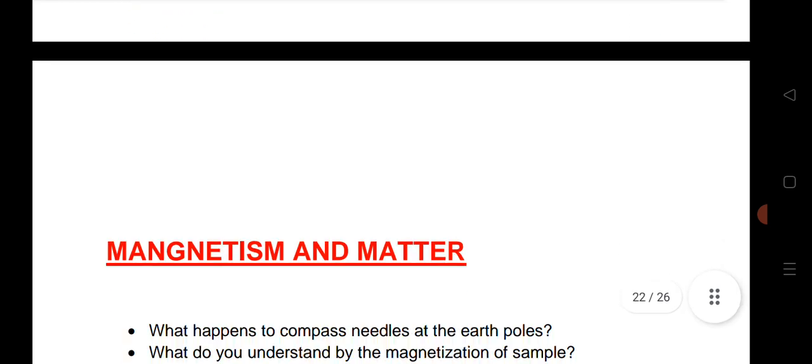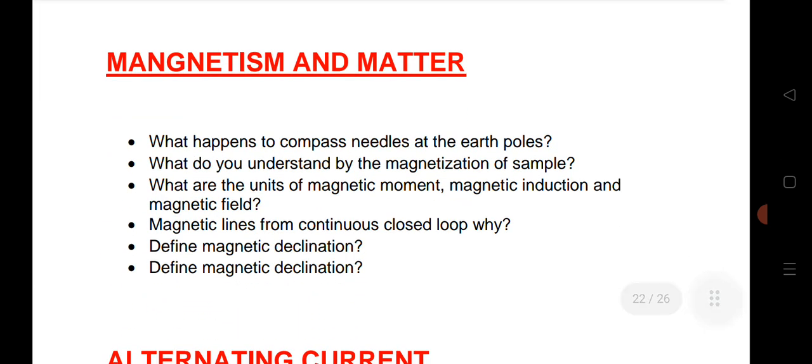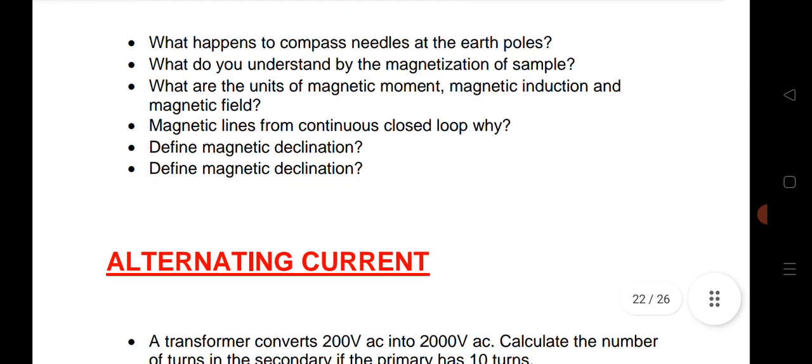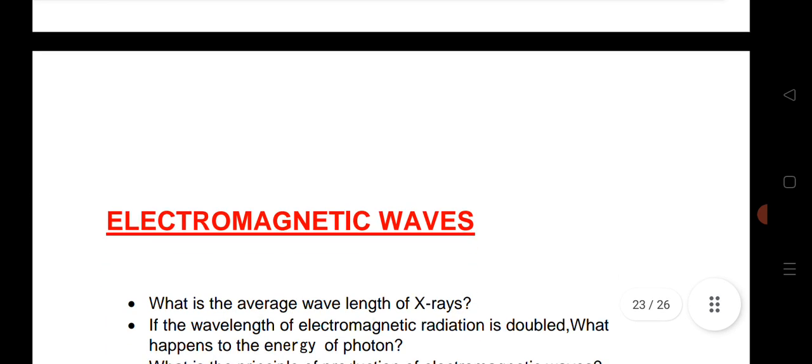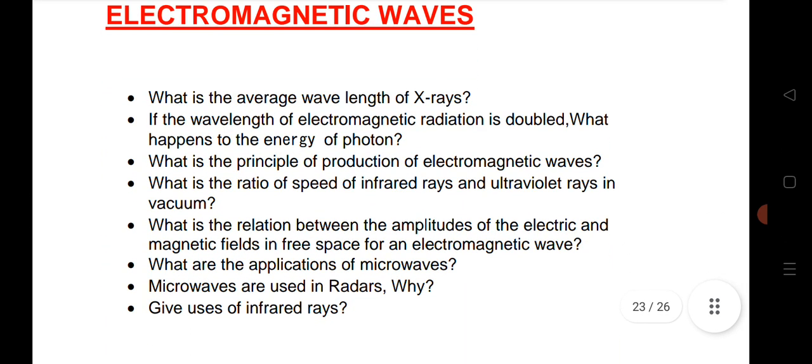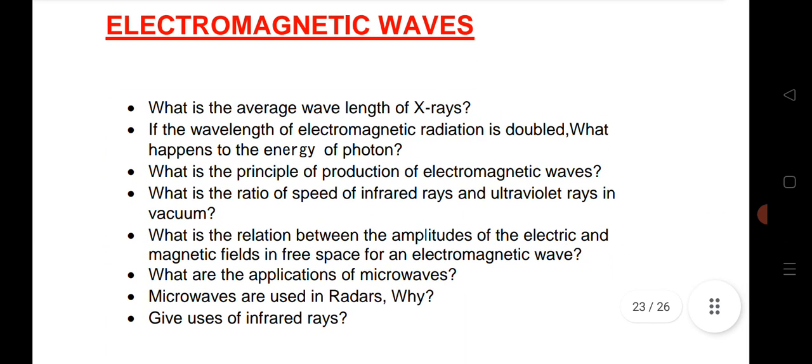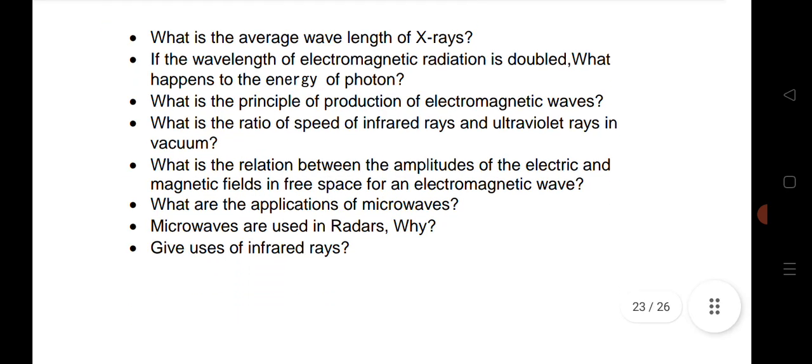Next is magnetism and matter. I have given some questions - very important chapter: magnetic inclination and declination. The last one is magnetic inclination, not declination. Alternative current - 1 VSAQ will come from alternative current. Note all these questions, very important. Next, electromagnetic waves - 2 VSAQs we are expecting. Practice all these questions, definitely you will get 4 marks from this chapter.